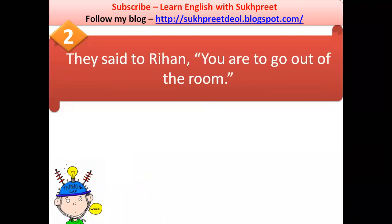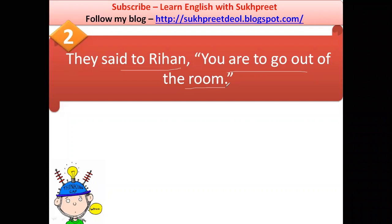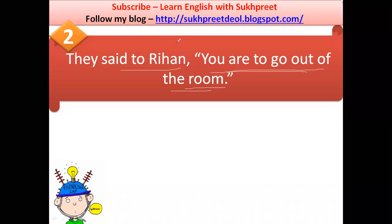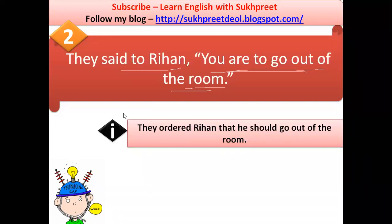Moving to the next question. 'They said to Rehan, you are to go out of the room.' Notice the undertone of this sentence — 'you are to go out' is expressing a command, an order. Imperative sentences express commands, forbiddings, advice, and requests. In this case it is a command, so let's look at the options.